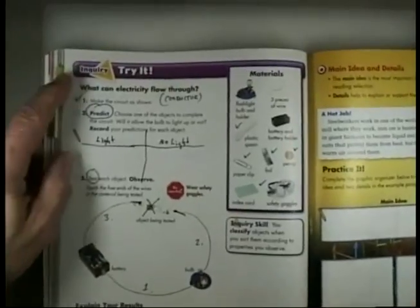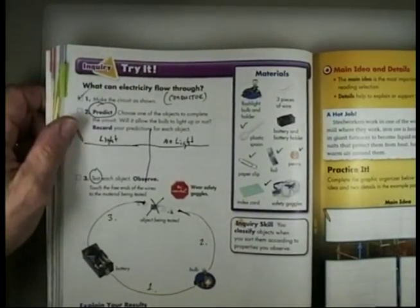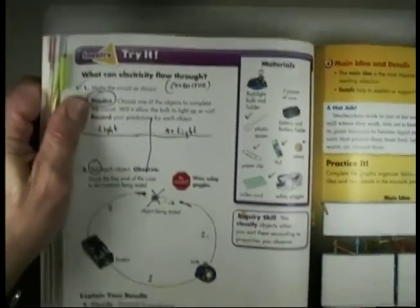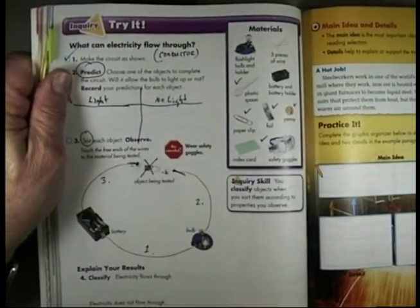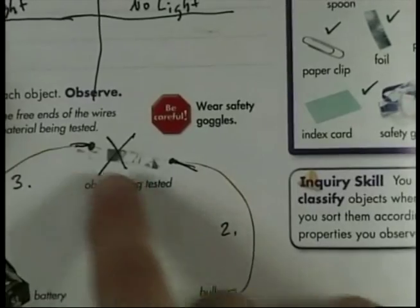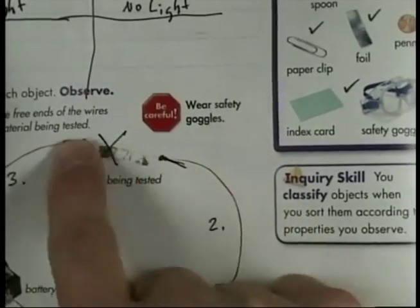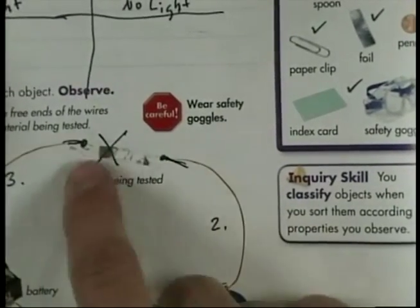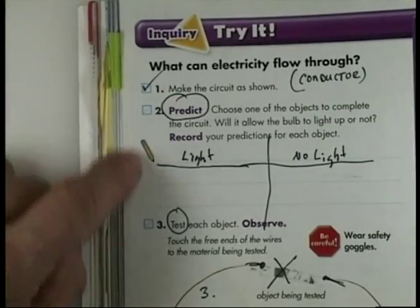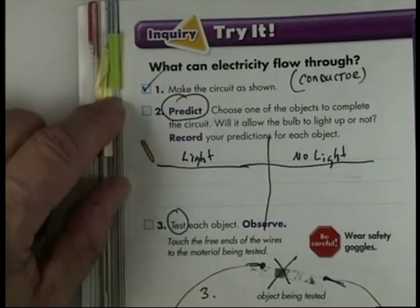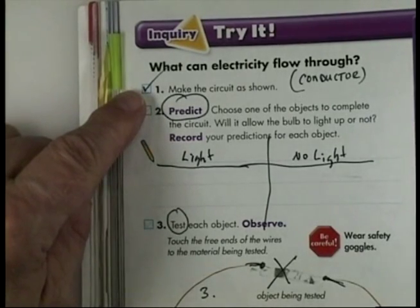We're using our Pearson Interactive Science book. The first one is on page 118, and it's called Inquiry Try It. What can electricity flow through? So we're going to set up a circuit using these parts right here. Now what I don't like about this book is it has a picture that looks like this aluminum foil is wrapped around these wires. Don't put the foil on yet. You need to check these things off and do them in this order. So first we're going to make a circuit.